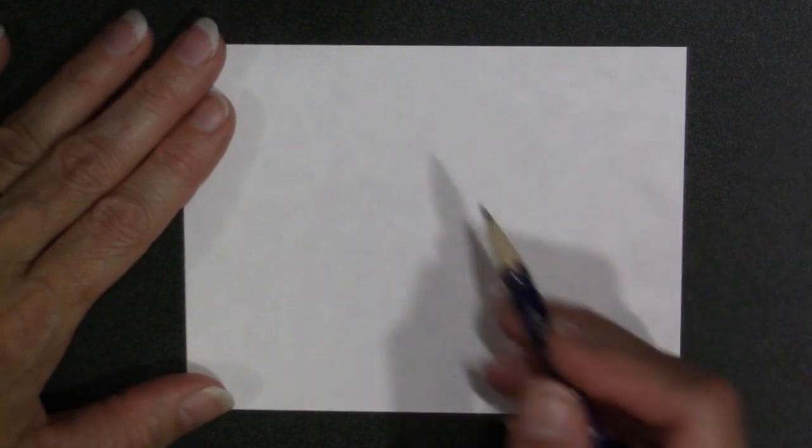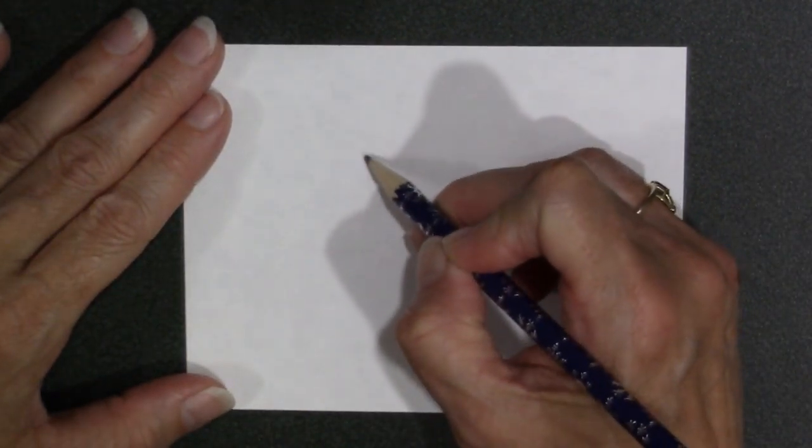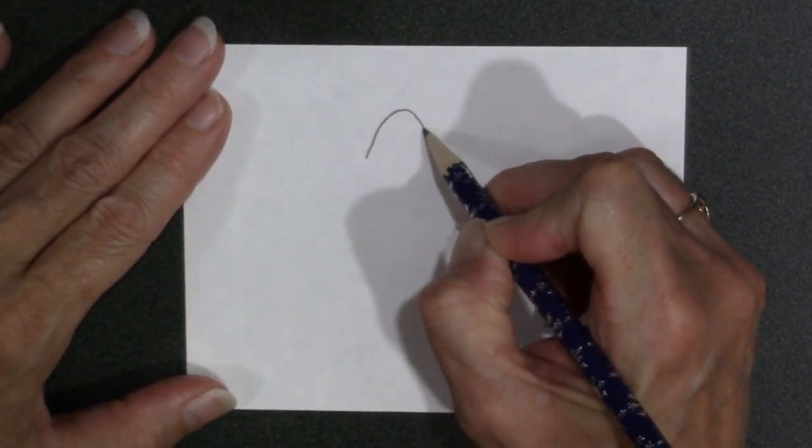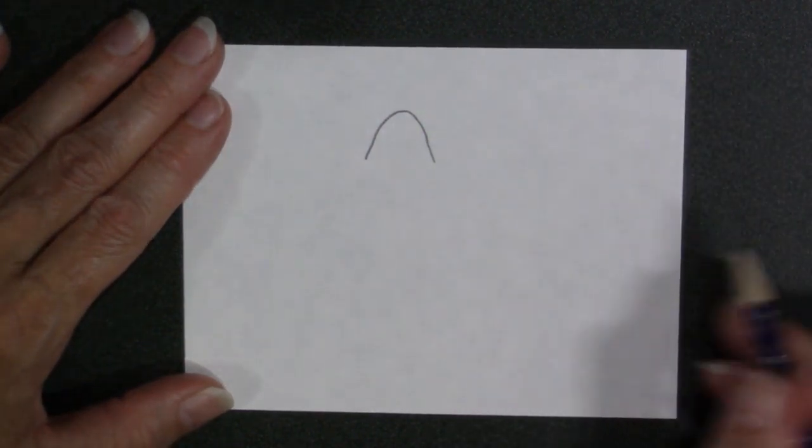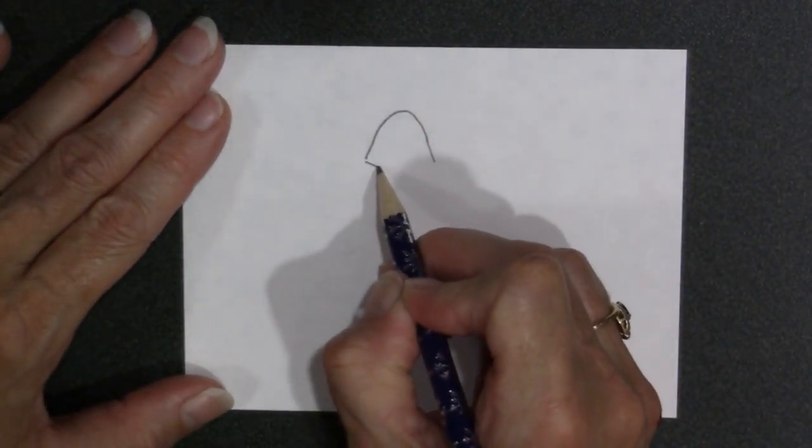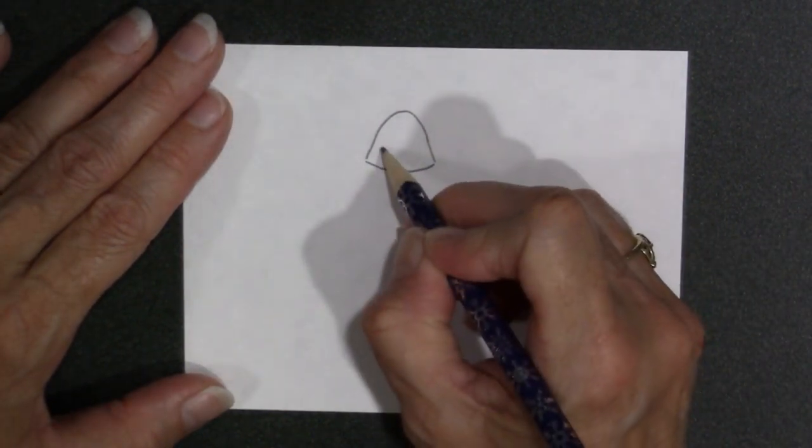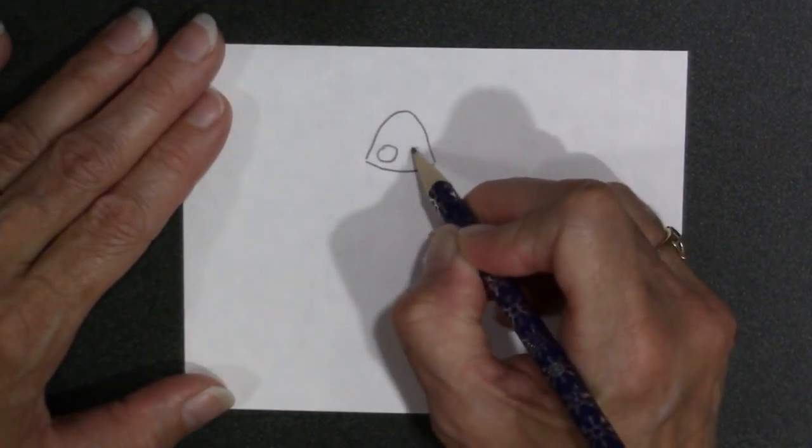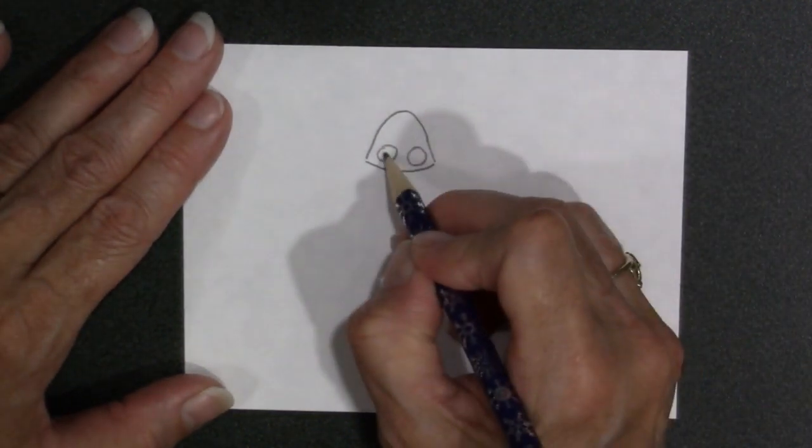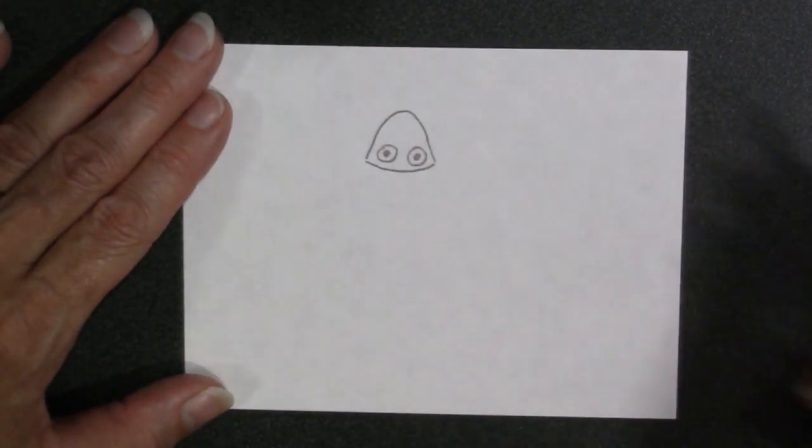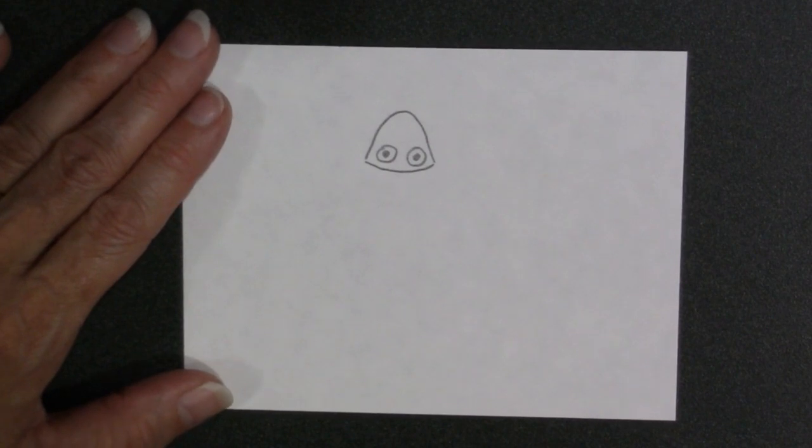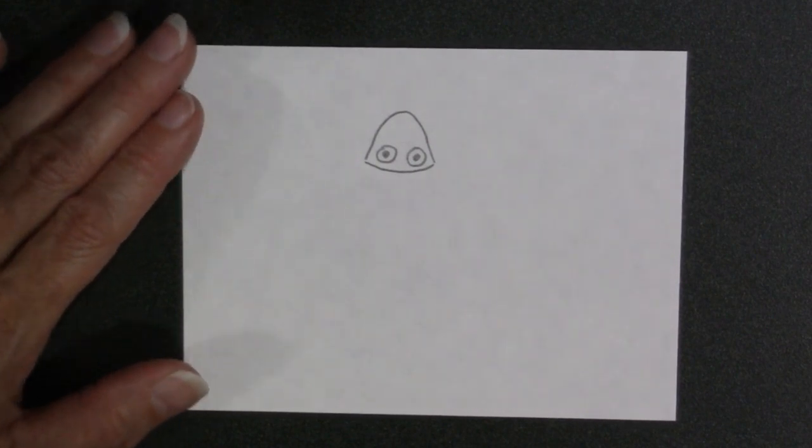Now we're going to do a ladybug. So you're going to start with a mountain-type curve that has corners at the bottom that are flatter and two circles inside with a dot inside of the circle. This is going to be the head shape.